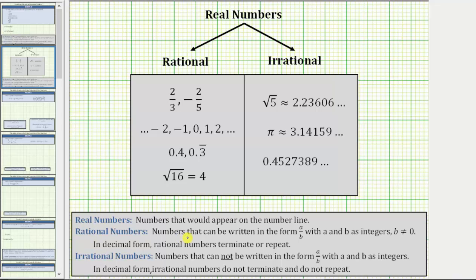Rational numbers are numbers that can be written in the form of a over b, with a and b as integers, b not equal to zero. In decimal form, rational numbers terminate or repeat.